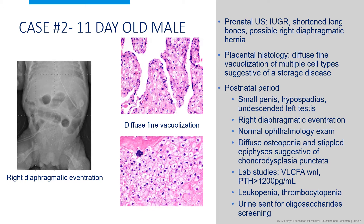Findings at delivery included a small penis with hypospadias and an undescended left testis. Eye exam was age-appropriate and unremarkable. Chest x-ray and ultrasound exams were consistent with right diaphragmatic eventration. Skeletal x-rays showed diffuse osteopenia and stippled epiphyses suggestive of chondrodysplasia punctata. Serum concentrations of very long-chain fatty acids were normal, including phytanic acid. The patient also had very elevated PTH. Histology of the placenta showed diffuse fine vacuolization of multiple cell types, suggestive of a storage disease.